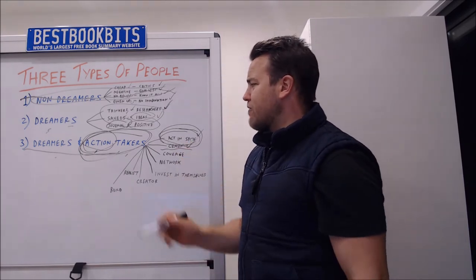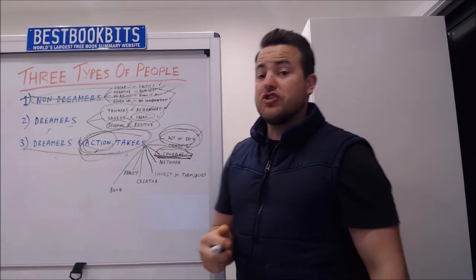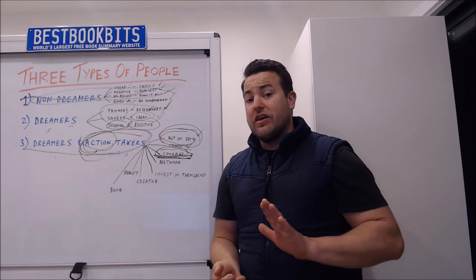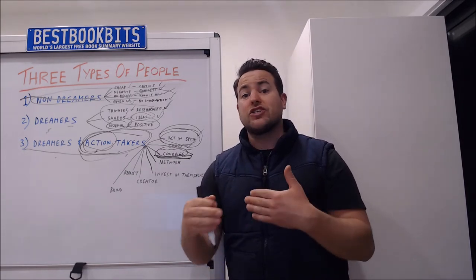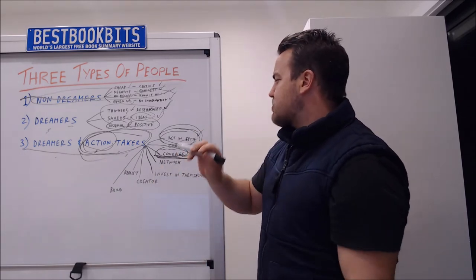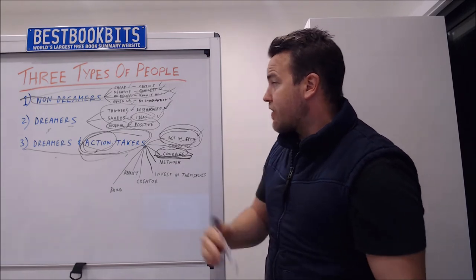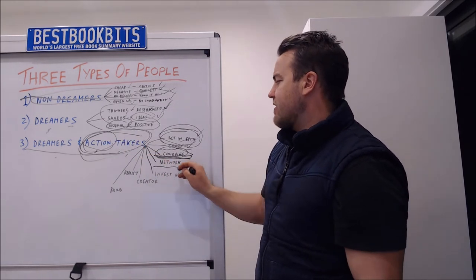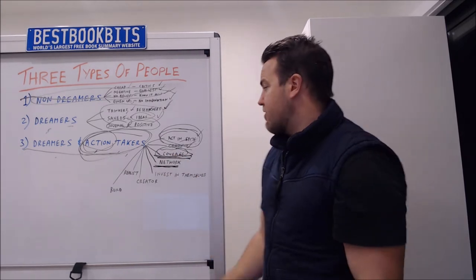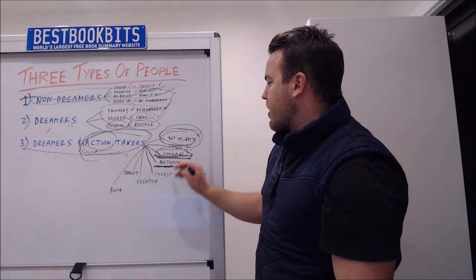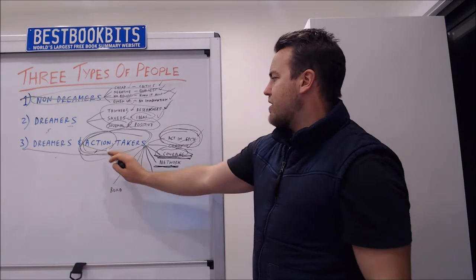Another characteristic of dreamers and action takers is courage. Courage is massive. It's not just a word. It's not just a feeling. It's actually a verb where you're actually doing something. So to be courageous you actually have to do something in spite of and to be called crazy by the non-dreamers. Another massive characteristic of dreamers and action takers is they network. They actually invest in people not just things. So if you network, you're courageous. If you've been called crazy and you're acting in spite of, congratulations, you are number three.